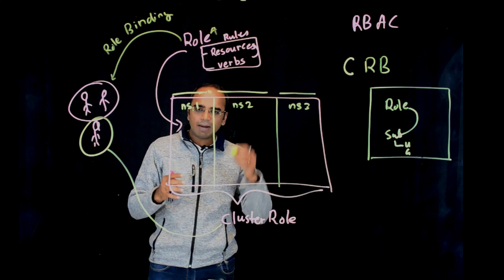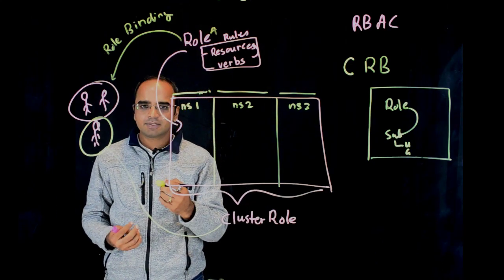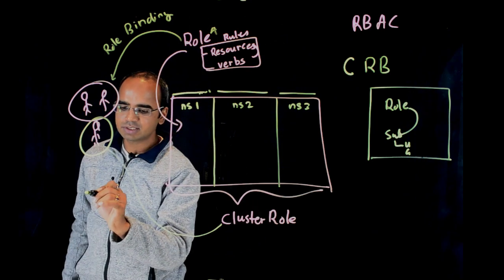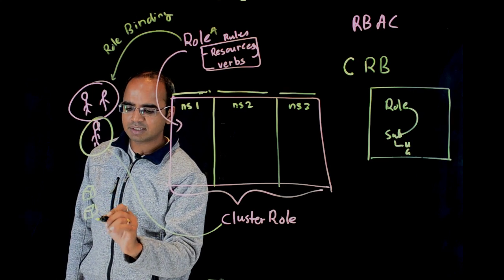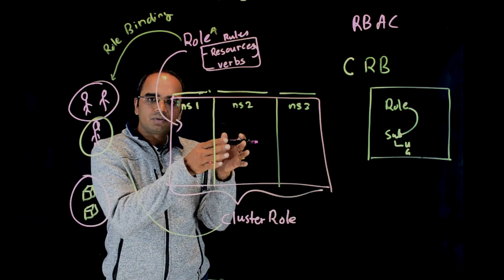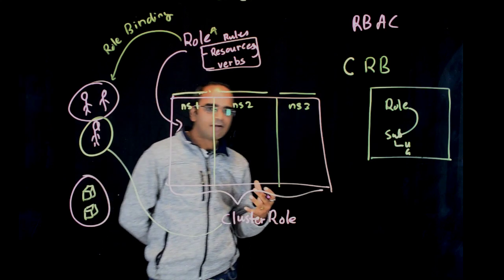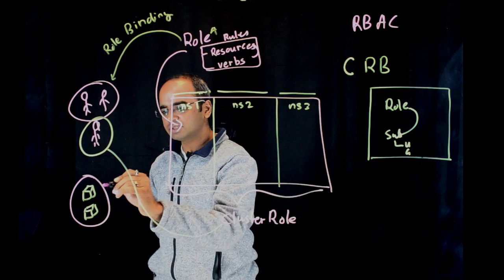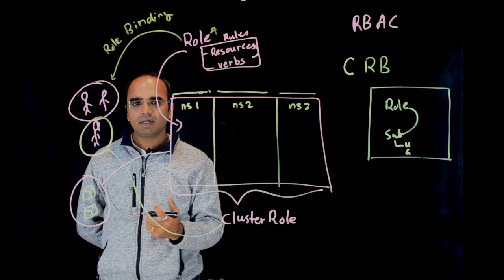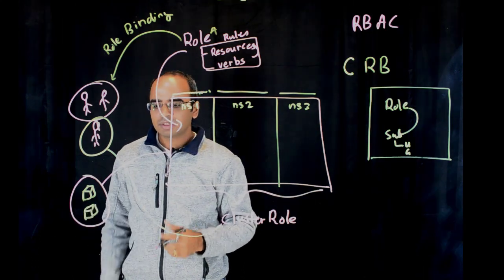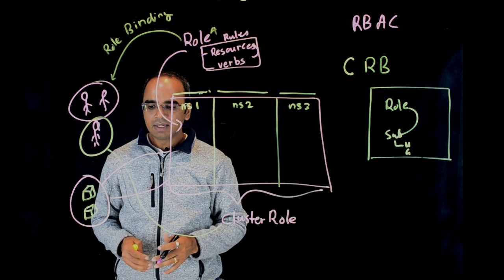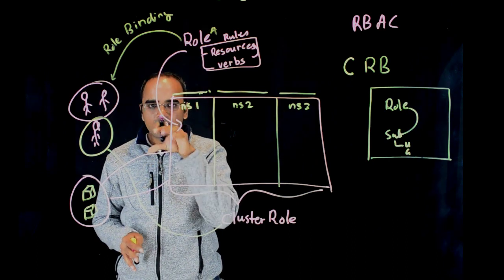RBAC is not just limited to human users — you can also provide access to applications. Applications generally run inside a Kubernetes cluster in the form of pods. One example is a monitoring system like Heapster or Prometheus running as a pod that needs to read your resources to get monitoring data. Another example is a storage provisioner that listens for storage requests from the cluster, creates a volume, and attaches it to one of the pods.